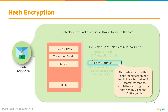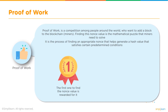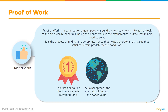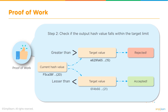What is proof of work? Proof of work is a competition amongst miners around the world who are constantly working on a public blockchain network and want to add a block to the blockchain. They are constantly working to find the nonce value — the mathematical puzzle that miners need to solve. It is the process of finding an appropriate nonce that helps generate a hash value satisfying certain predetermined conditions called the target. The first miner to find the nonce value gets rewarded and spreads the word amongst all other miners.